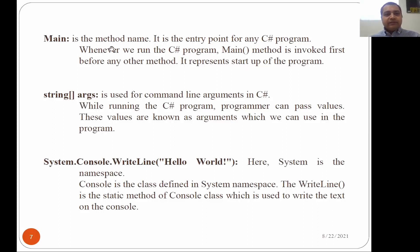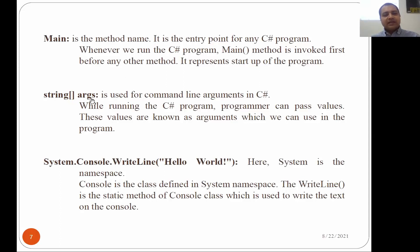Main is the method name and it is the entry point of the C# program. Whenever we run a C# program, main is invoked first before any other method — it represents the start of the program. String array args: args is an identifier and you can change this name to anything. By default the compiler provides args. String args is used for command line arguments in C#.